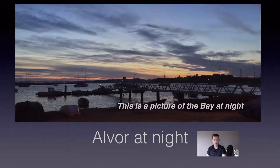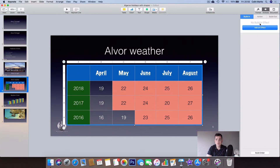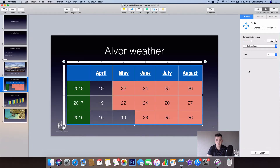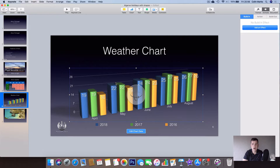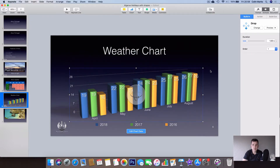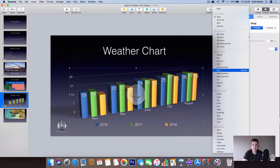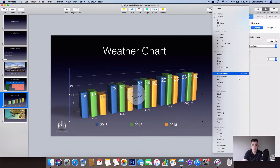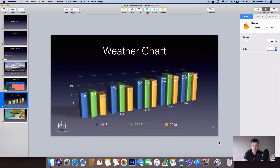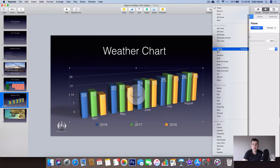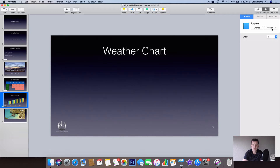The same applies to tables — click on a table, animate it, and choose effects like 'Move In', 'Wipe', 'Drop', or 'Drift', so the table drops in. And the same with charts — click 'Animate', 'Add an Effect', maybe 'Drop' so they drop in, or 'Drift', 'Move In', 'Bounce'. There are special effects like 'Flame' as well. You can do them all — plenty of different options for charts.